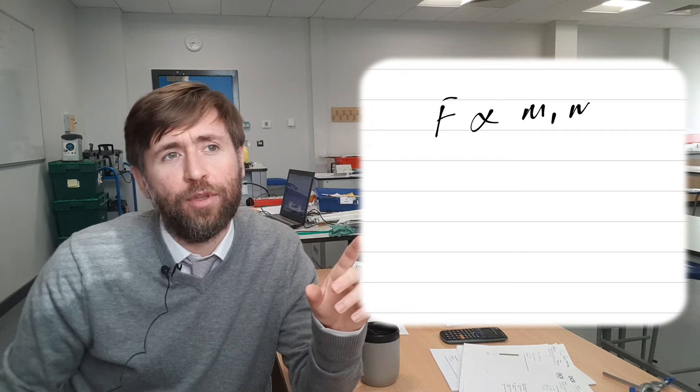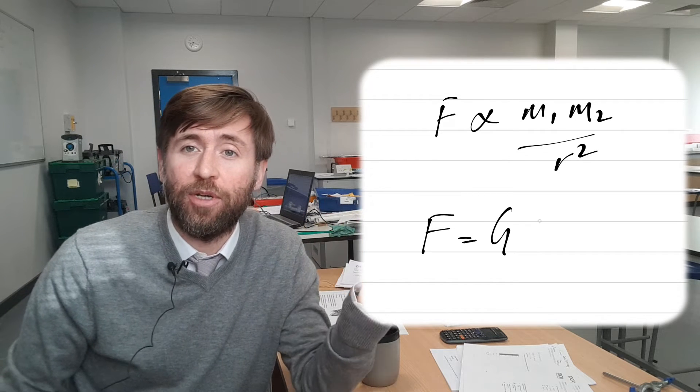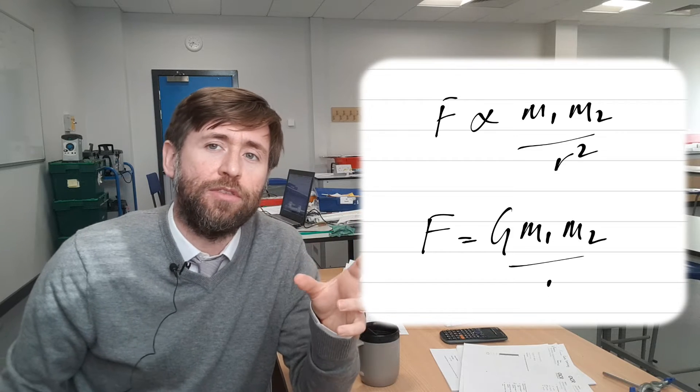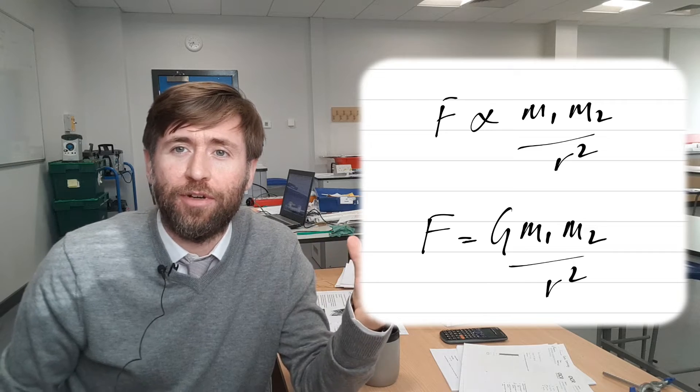And when we've got a proportional law then it can be stated that this is equal to this times by some constant. So they wanted to measure this constant, this universal gravity constant, this constant of universal gravitation if you like.